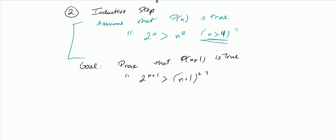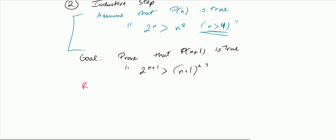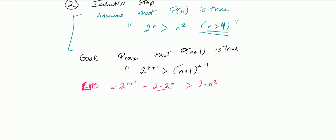I'm going to start by doing the wrong move — shown in red — because some of you would have probably started this way, and I want to show why you get stuck. Starting with the left-hand side: 2 to the n+1 equals 2 times 2 to the n. You can apply the inductive step to say this is greater than 2 times n squared, and 2n squared equals n squared plus n squared. But then where does that leave you? You get stuck if you take this road.